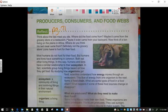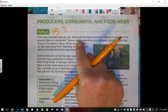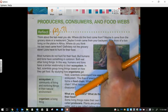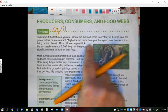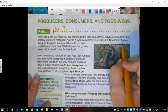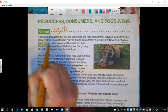So it says think about the last meal that you ate. Where did the food come from? Maybe it came from the grocery store or a restaurant. Maybe it even came from your backyard. Now think of a lion living on the plains in Africa.